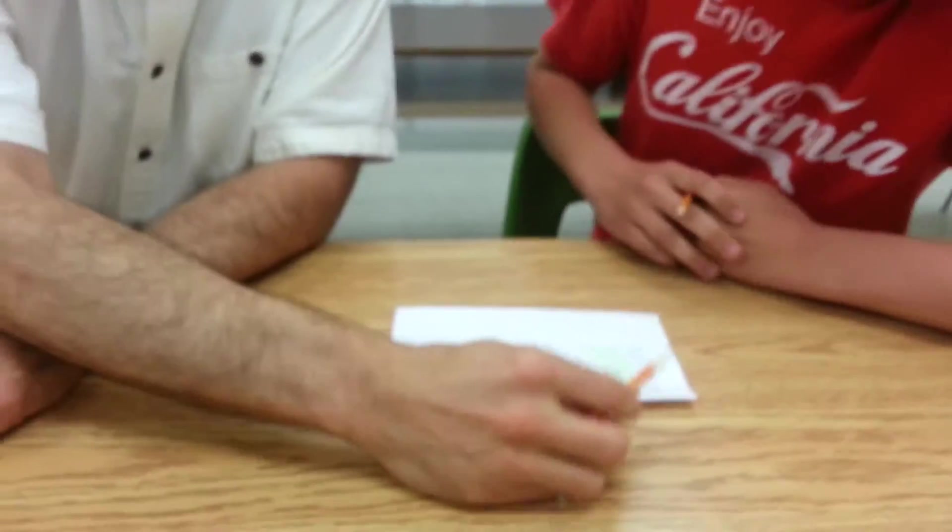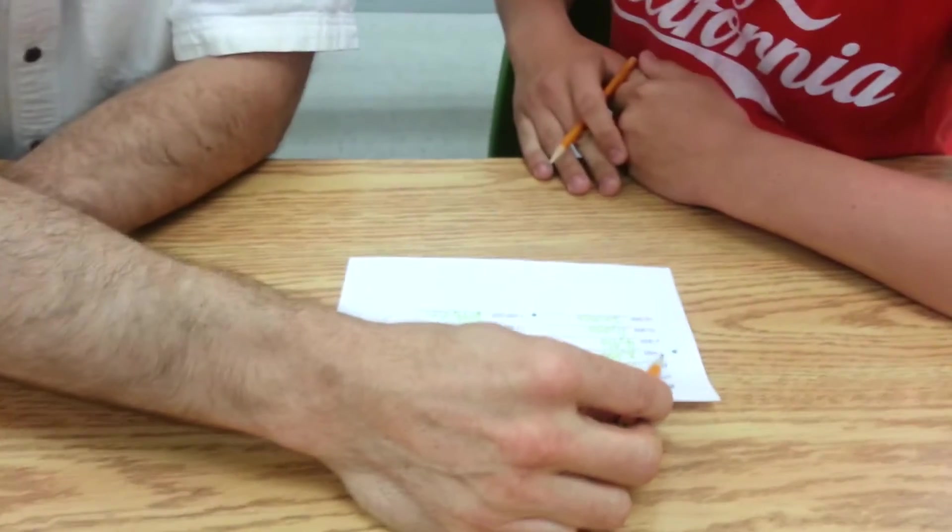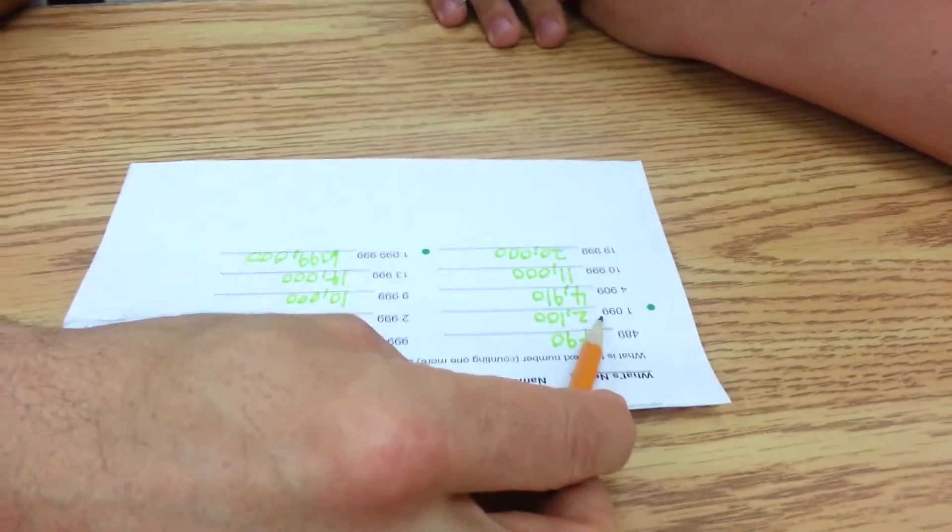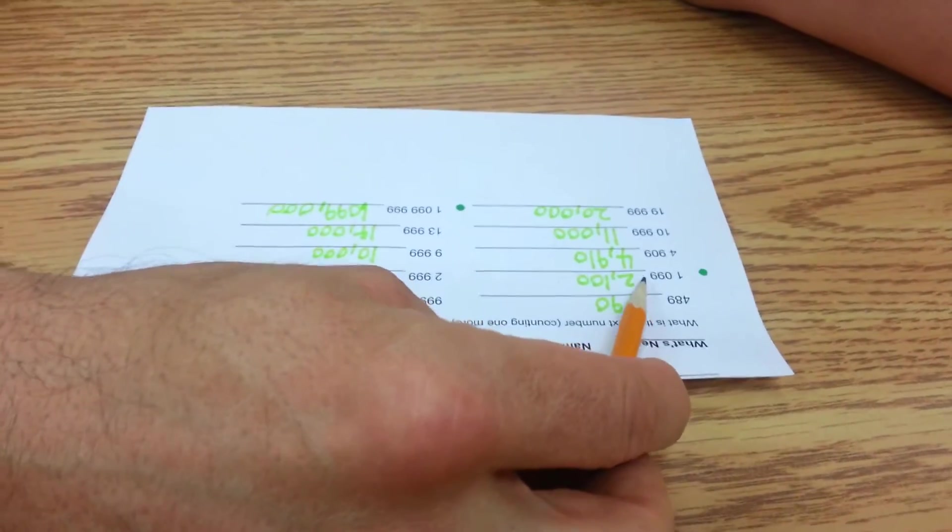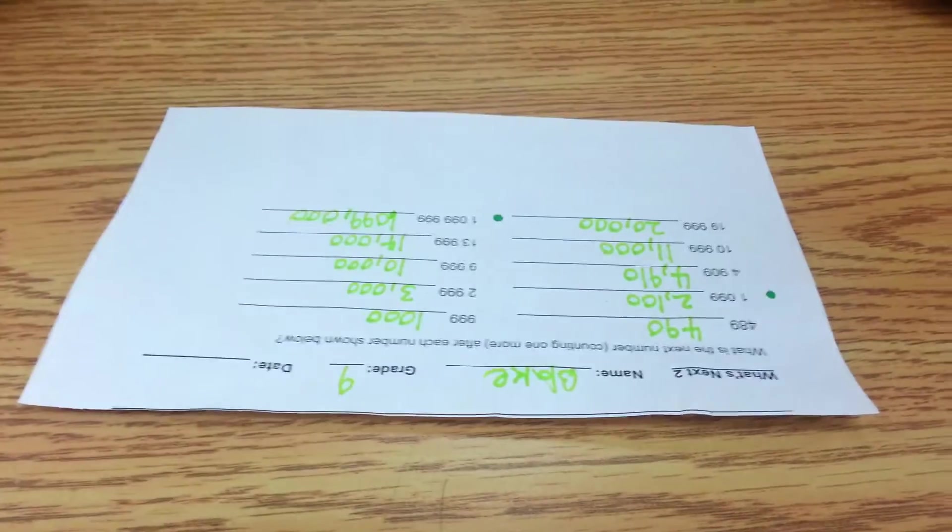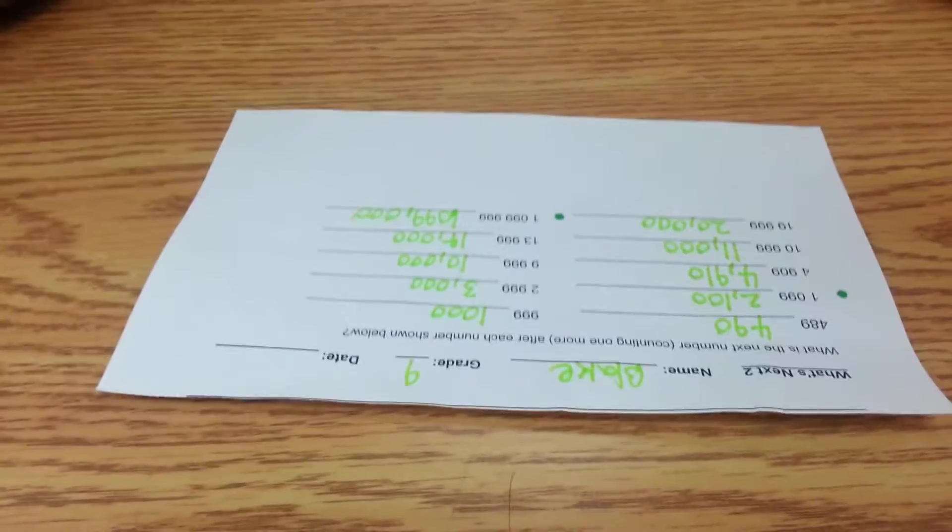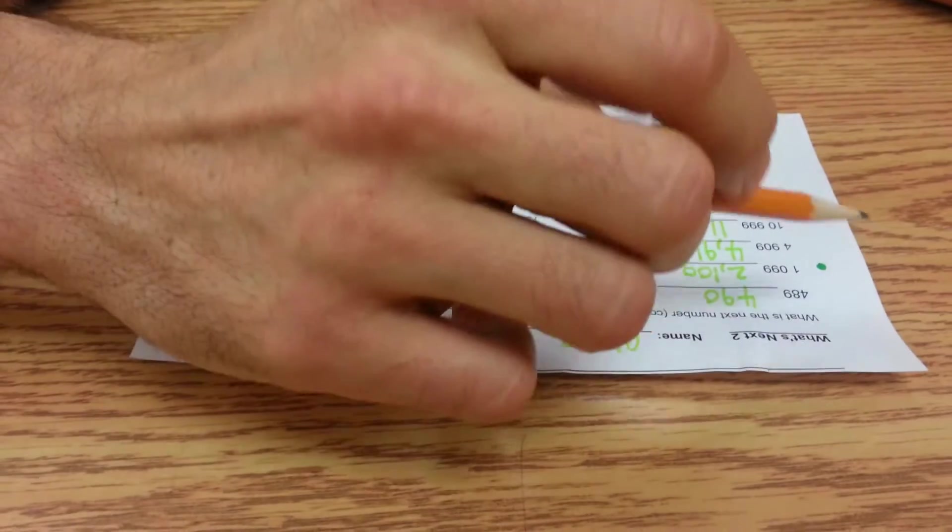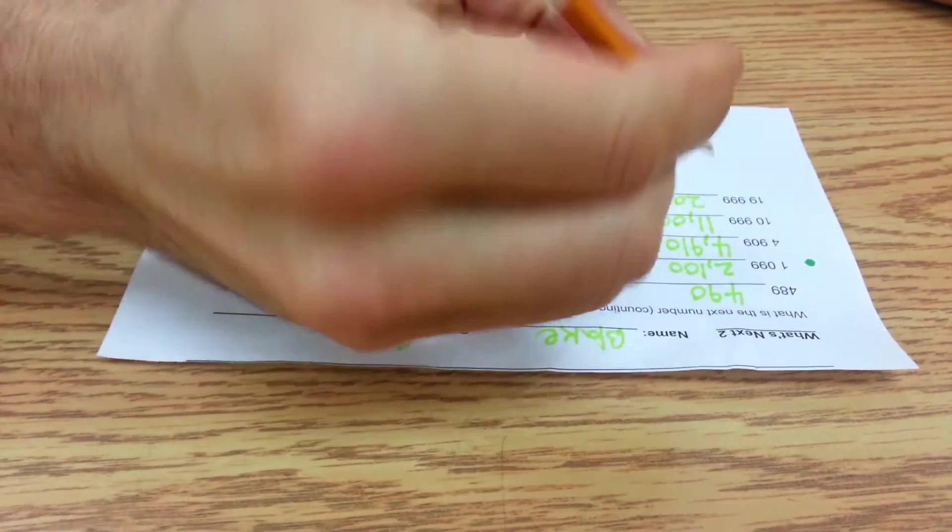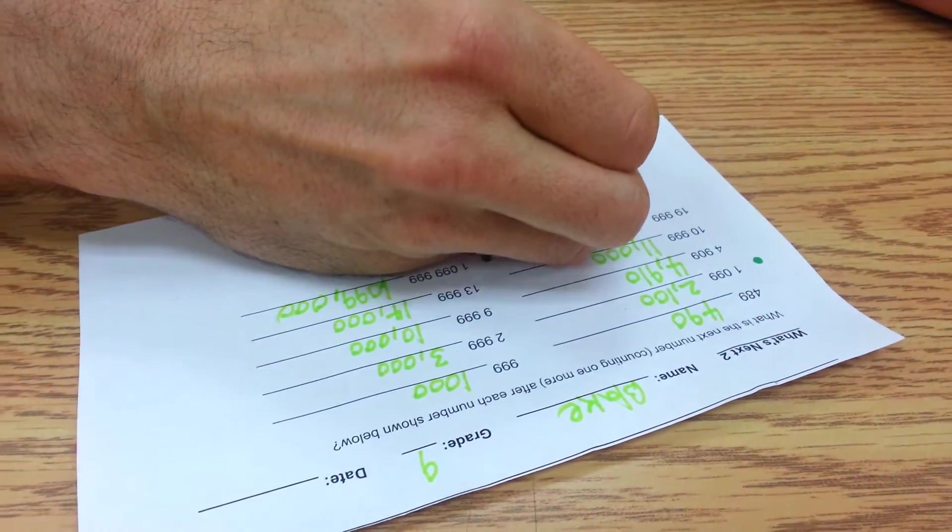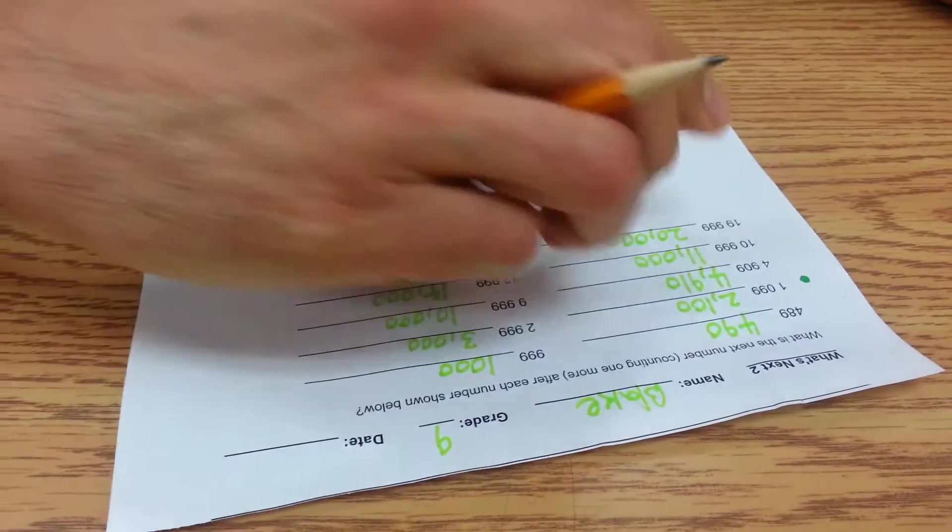Remember doing this? Yeah, I do. So, what's the next number counting by one for each one? So, for this one, what's that number? Can you read it out loud? 1099. Okay, what'd you got here? I put 2100. Okay. If you counted by ones, starting at 1097, and you go up by one, what's after 1097?